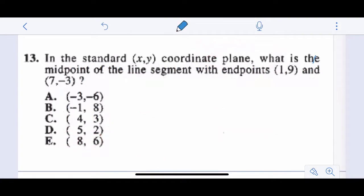What is the midpoint of the line segment with endpoints 1, 9, and 7, negative 3? So we can just know our formula. x1 plus x2 divided by 2 equals midpoint of x. So we have x1 is 1, x2 is 7, divided by 2 equals x.